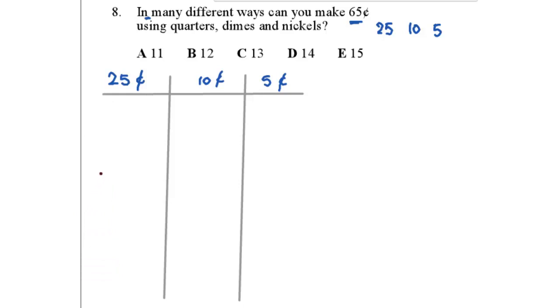First of all, let's start with the biggest numbers we have, which is 25. Okay, then we're going to go with 10, then 5. Now, can you make 65 cents using three 25's, three quarters? No, because that's 75. So, the biggest possible number of quarters that I can use is 2. So, 2 quarters.